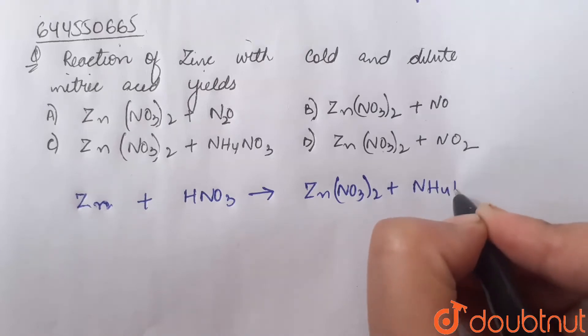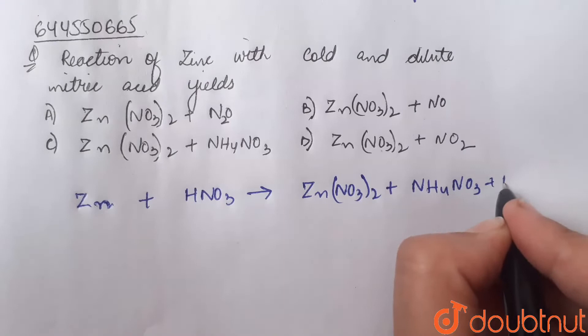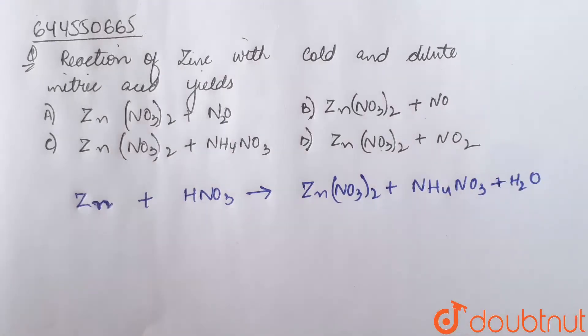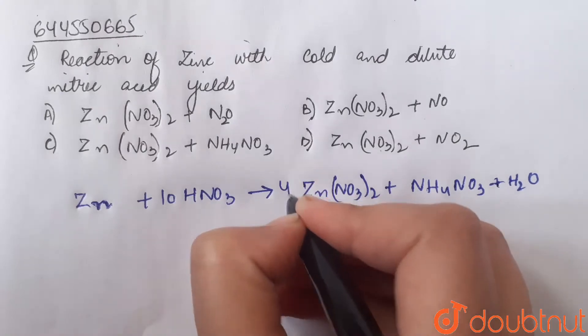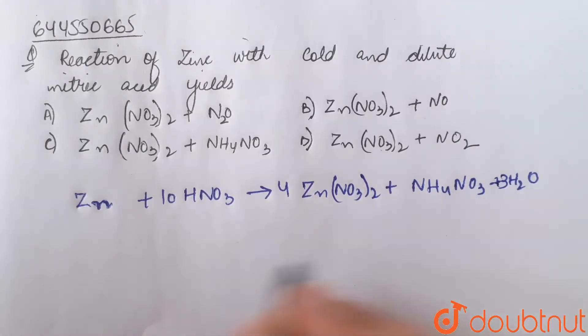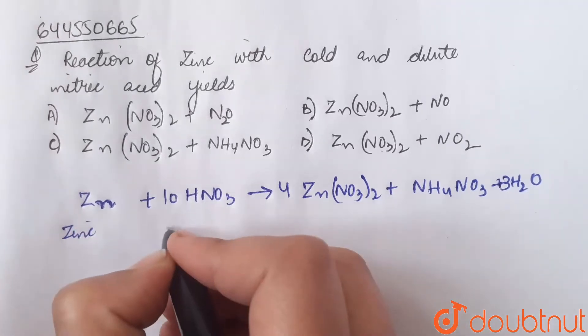Zinc nitrate Zn(NO3)2, along with ammonium nitrate NH4NO3 and water plus H2O. Balancing the reaction: 4 Zn + 10 HNO3. Hence, reaction of zinc with cold and dilute nitric acid yields zinc nitrate, ammonium nitrate, and water.